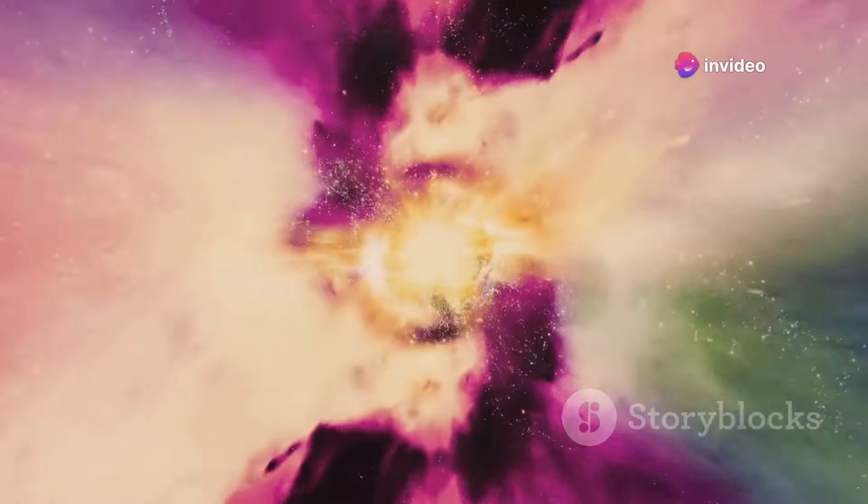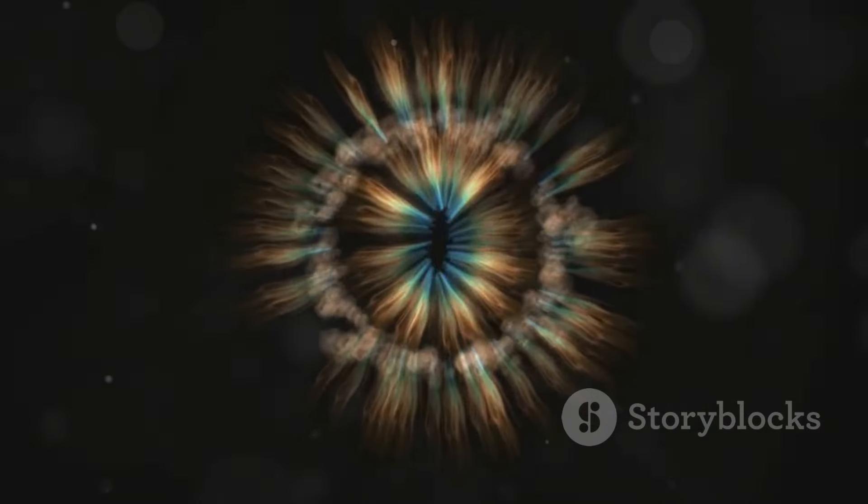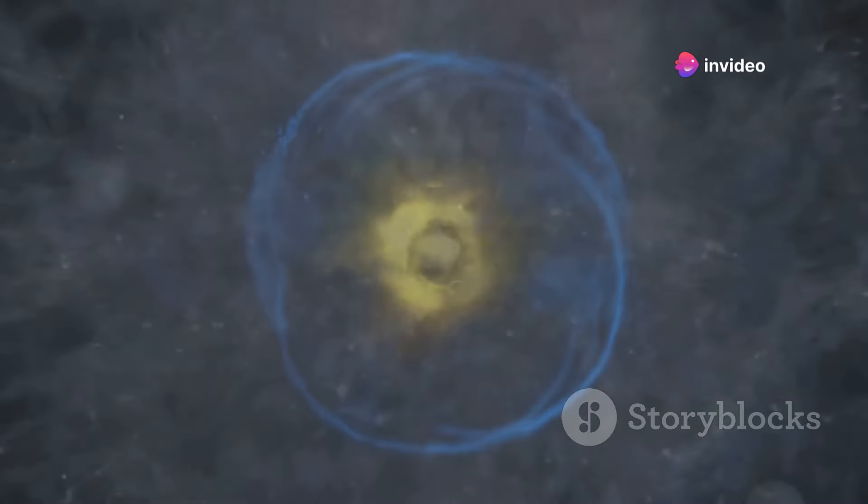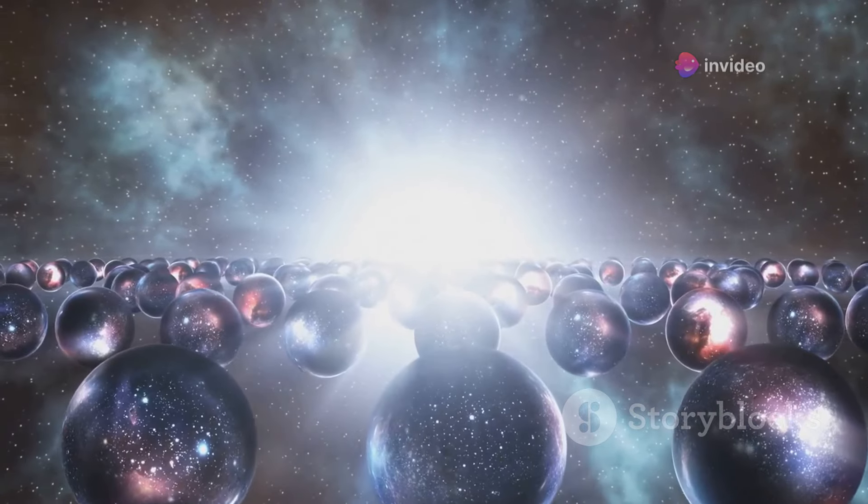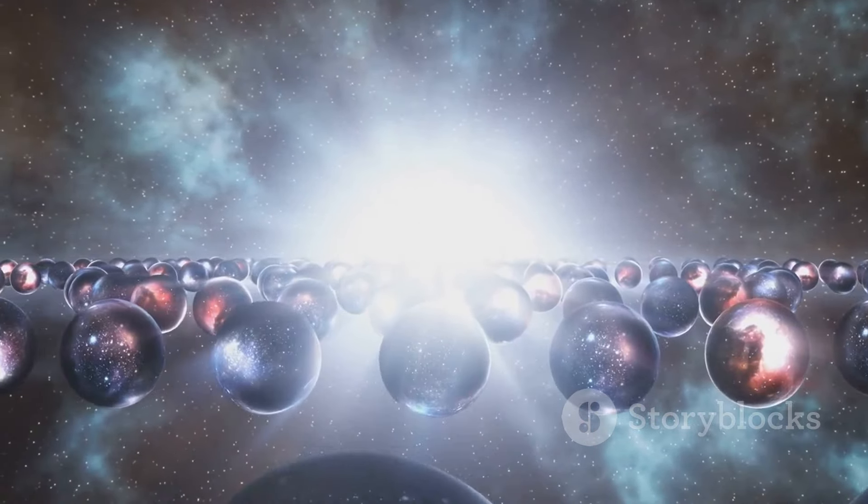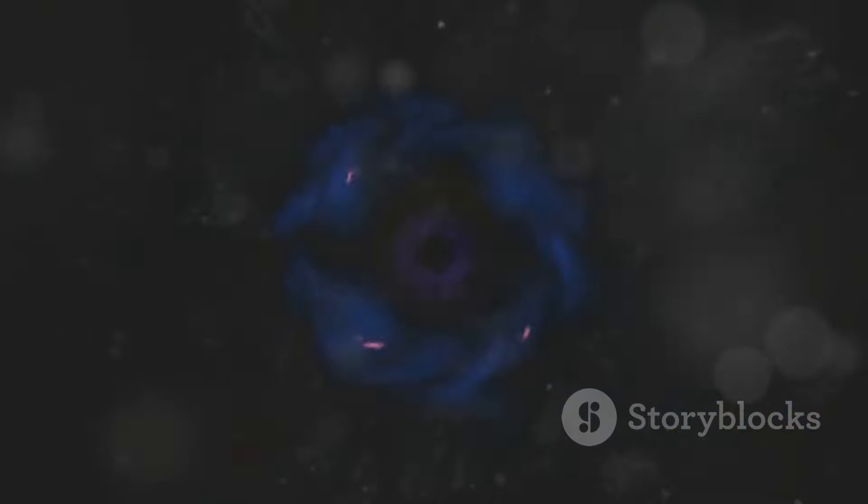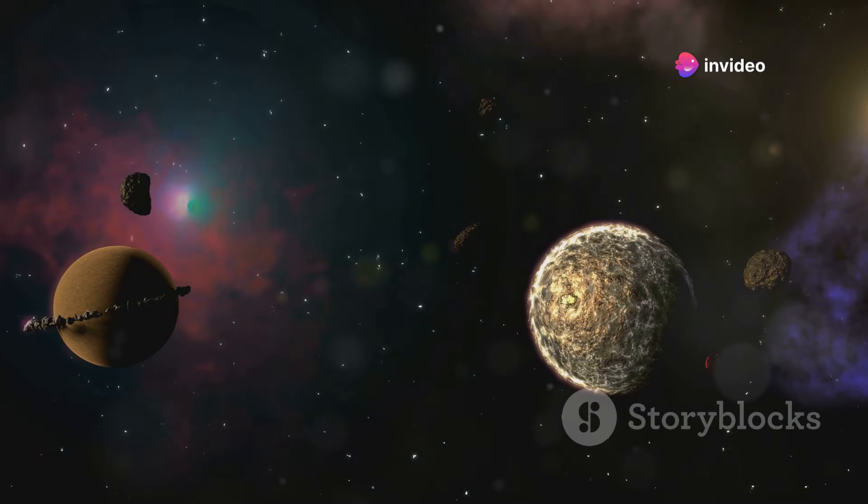Have you ever wondered how the universe could end? It's a question that has captivated philosophers and scientists for centuries. Will it be a bang, a whimper, or something even more bizarre? In this video, we'll explore three mind-blowing ways the universe could meet its ultimate demise. We'll delve into the depths of space and time to understand these cosmic apocalypses, from the fabric of space-time ripping apart to the universe collapsing back in on itself. Fasten your seatbelts, Space Explorers, as we embark on a journey to the end of everything.